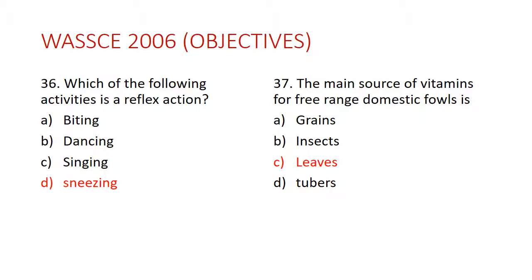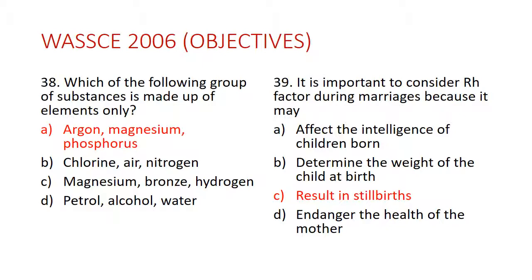Question 37: The main source of vitamins for free-range domestic fowl is C — leaves. Leaves are a great source of vitamins for domestic fowls. Question 38: Which of the following groups of substances is made up of elements only? The answer is A — sulfur, magnesium, and phosphorus. These three are elements. In option B there is air, which is not an element. In C there is bronze, which is an alloy, and in D there is water, which is a compound.